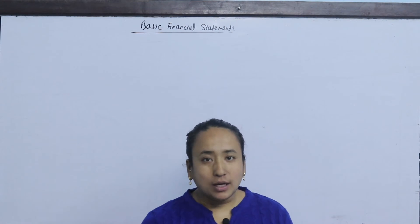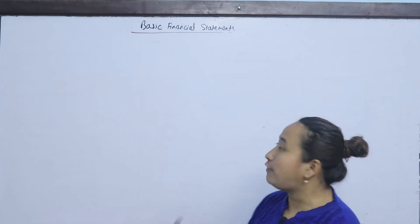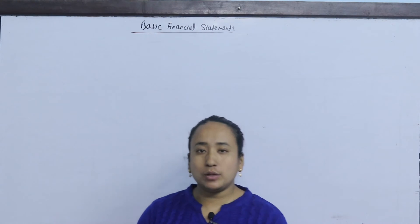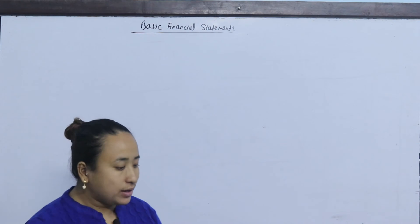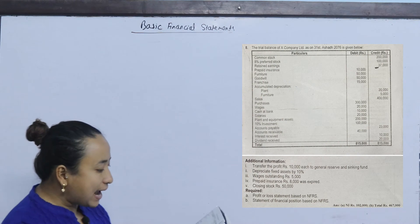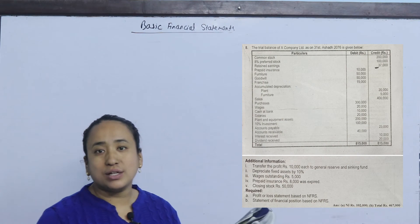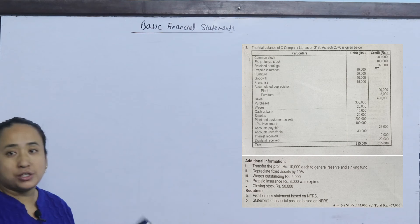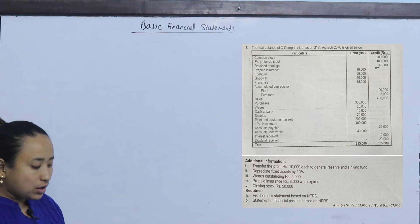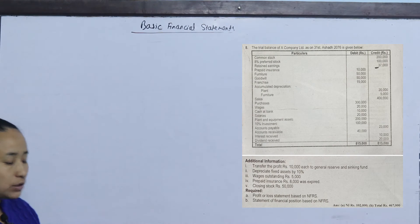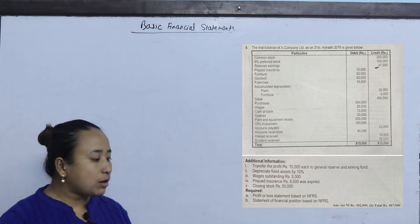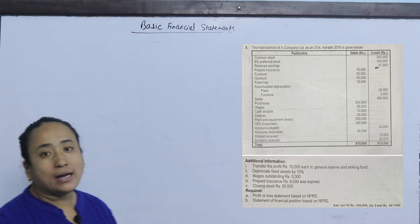Namaskar. In today's class, we will solve the basic financial statement using the NFRS method. The first question is: the trial balance of X Company Limited as on 31st Ashad 2076 is given below. Additional information is required to prepare the Profit or Loss Statement, Income Statement, and Statement of Financial Position. What is the basis of NFRS?